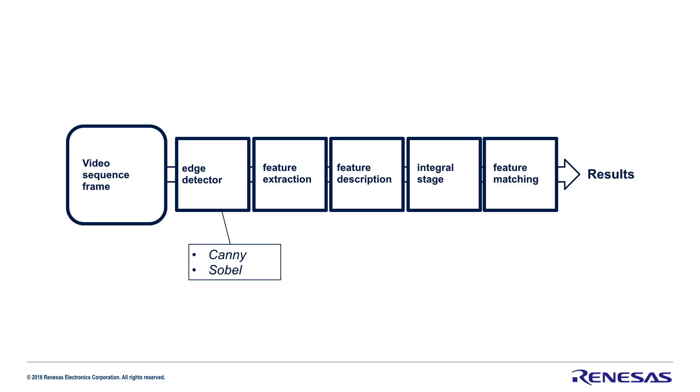Let's say you are working on a video-based surveillance system — then you may want to integrate moving object tracking functionality. For this you want to implement edge detection, feature extraction, and feature matching. Good examples for edge detection are Canny and Sobel filters or operators.